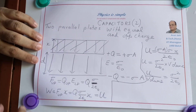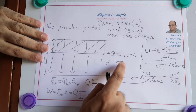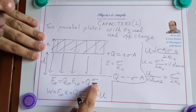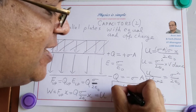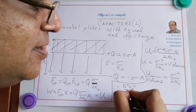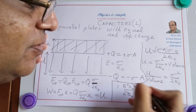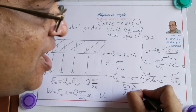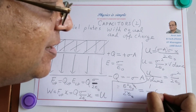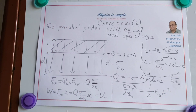We know the electric field E equals sigma by epsilon naught, so sigma equals E times epsilon naught. Substituting, the energy density becomes E squared times epsilon naught squared by two epsilon naught, and one factor of epsilon naught cancels, leaving us with half epsilon naught E squared. This is a very important formula — it is the field energy density, the energy per unit volume in any space where an electric field is present.